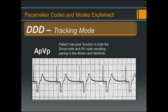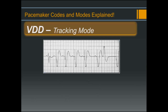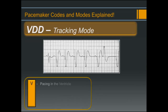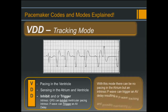Now let's move on to the second dual chamber tracking mode: VDD. With VDD, we are pacing in the ventricle, sensing in the atrium and ventricle, and the response to sensing will be to inhibit or trigger an AV delay. An intrinsic QRS can inhibit ventricular pacing, and an intrinsic P-wave can trigger an AV delay. With this mode there can be no pacing in the atrium, but an intrinsic P-wave can trigger an AV delay, resulting in P-wave tracking and possibly maintaining AV synchrony.